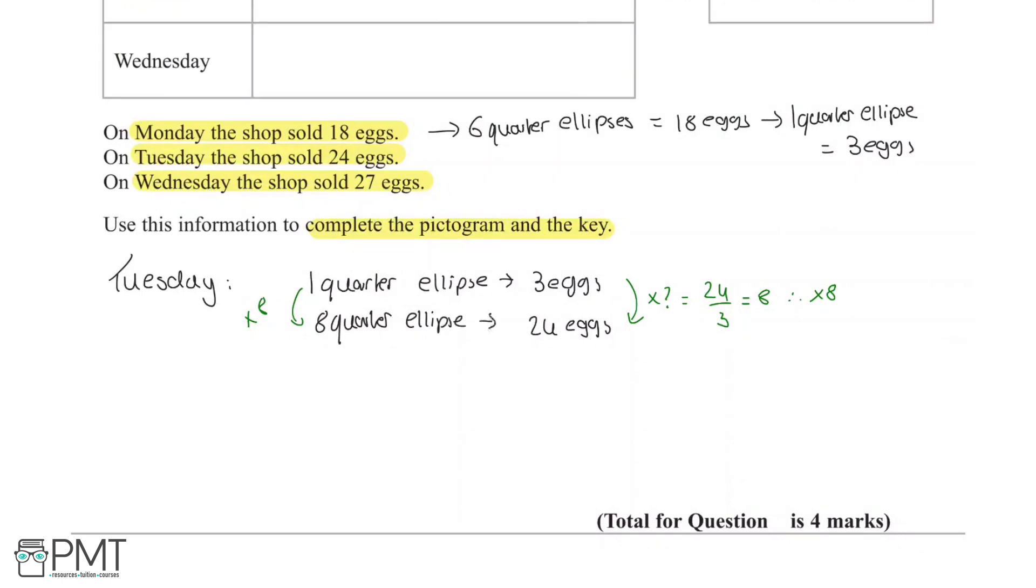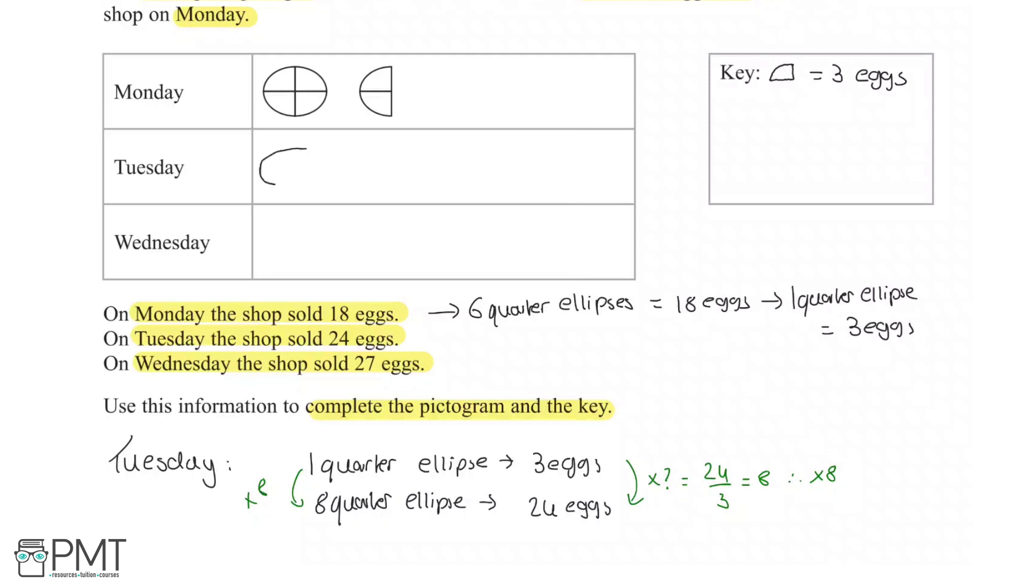Now what we can do is we can draw this. So 8 quarter ellipses—I'm going to draw one full like this, and then I'm going to draw another full like this. Because 8 quarter ellipses, if each one has 4, it means we have 2 full ellipses.